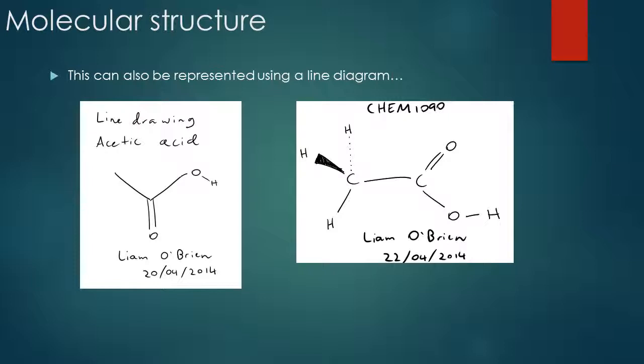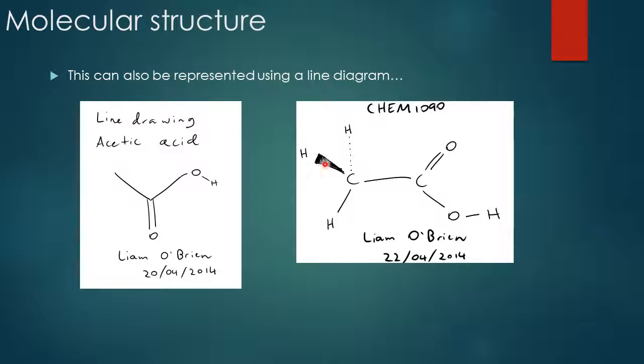The molecular formula is C2H4O2, around 60 grams per mole. It can also be represented using a line diagram, which I actually drew myself — carbon double bonded to the oxygen, and carbon over here bonded to three hydrogens. On the right we have the structural representation, with the bold line indicating bonds coming out of the page, and the dotted line indicating bonds going back into the page.